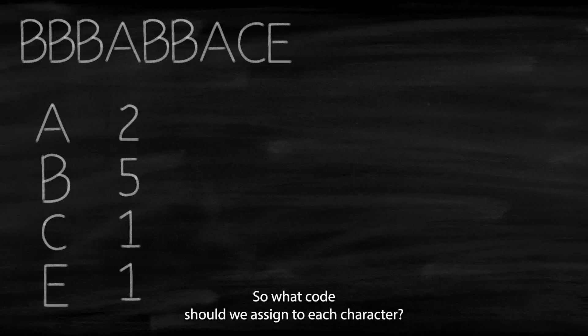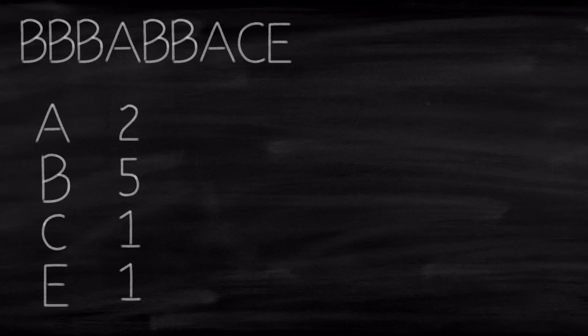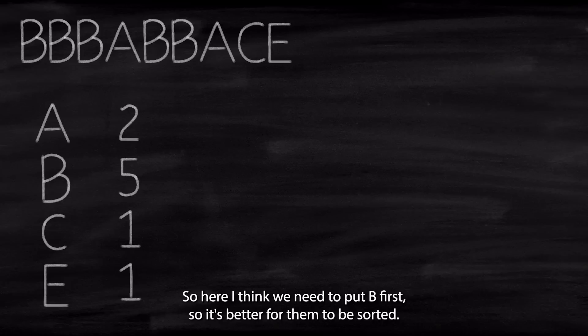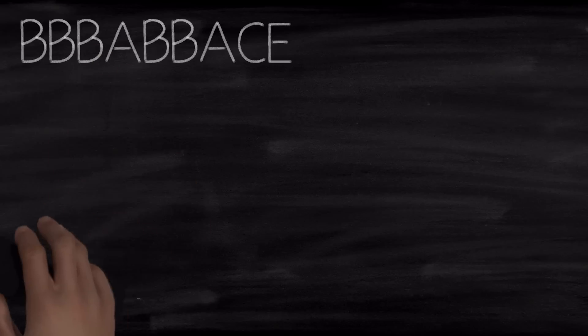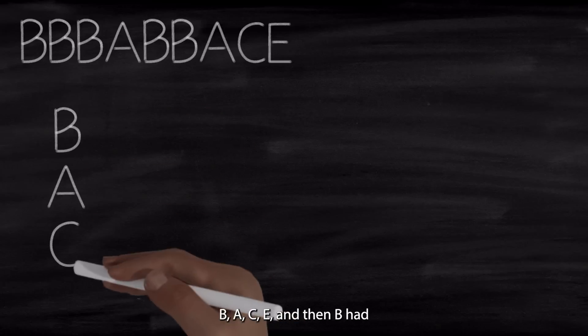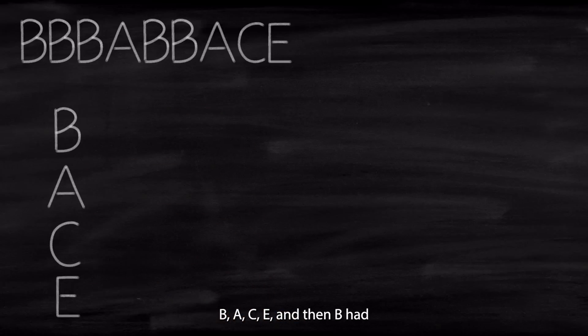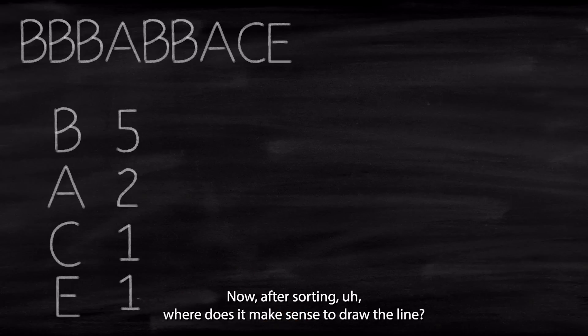So what code should we assign to character? Well, I think first we need to see what is the most frequent one. And we assign the shortest code to the most frequent one, which is going to be B. But first, let's sort them. So here I think we need to put B first. So it's better for them to be sorted. So it's going to be B, A, C, E. And then B had 5, A had 2, C had 1, E had 1. Now, after sorting, where does it make sense to draw the line?